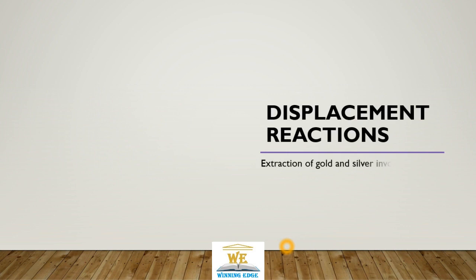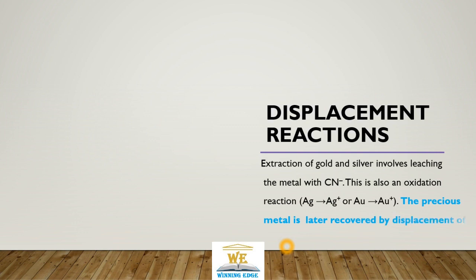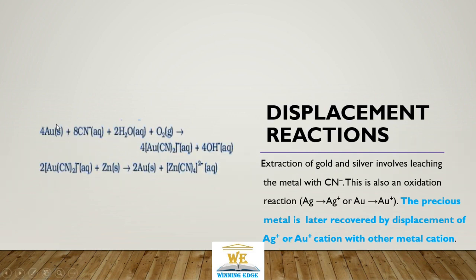Displacement reactions. Extraction of gold and silver involves leaching of metals with cyanide. This is an oxidation reaction. And later on, this precious metal will be recovered from this leaching solution using some cheaper metal. Like we have here, gold leaching - we are getting the Au(CN)2- negative. Finally, we have this solution leached with zinc to get pure gold back and a zincate solution.